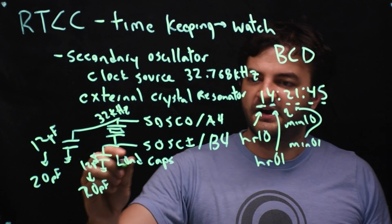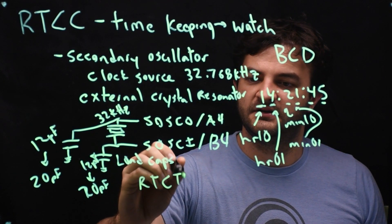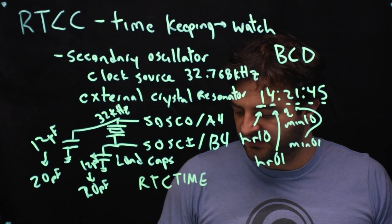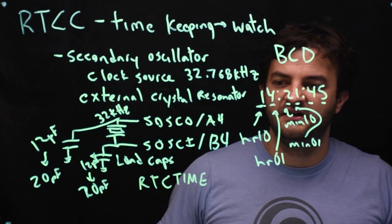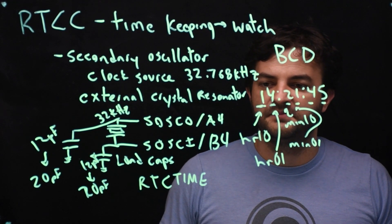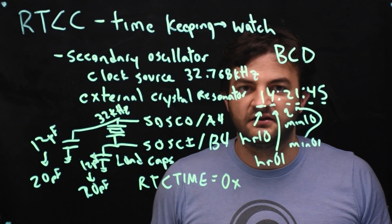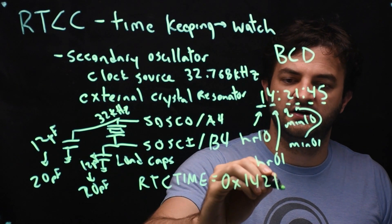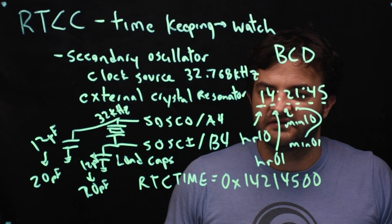The PIC stores the time in a special function register called RTC time. So that's an unsigned 32-bit number. And it stores it in kind of a nice way so that we can update the time simultaneously without having to go in and change each of these fields. We can just put it into one big hex number. So I could put this as 0x, and to set this time, it would be 14, 21, 45, 00, and 00 there because we just have more bits that are necessary.